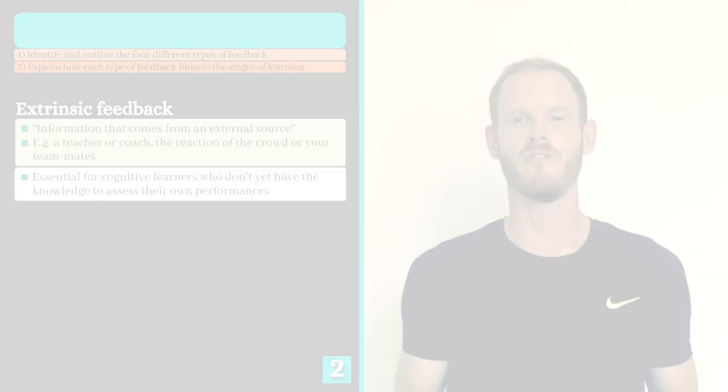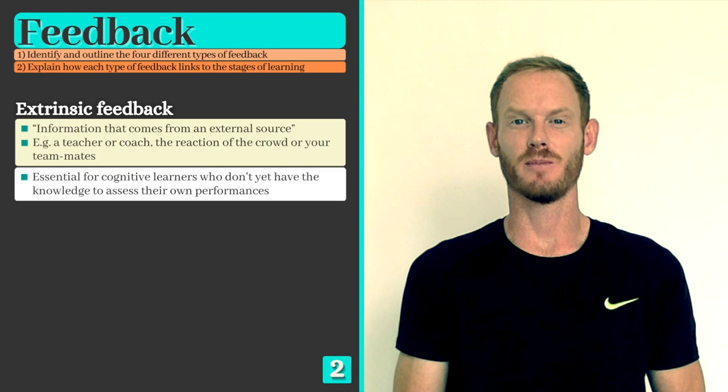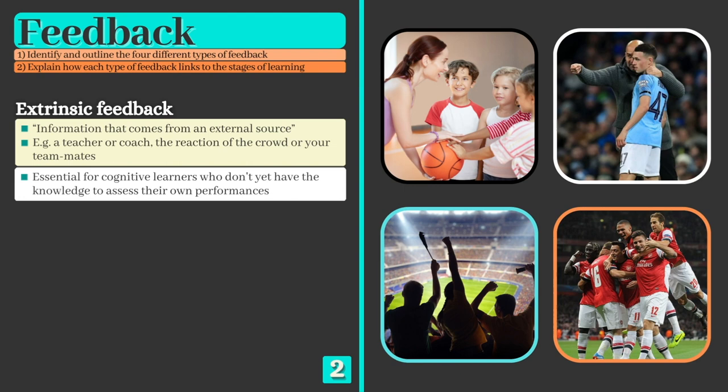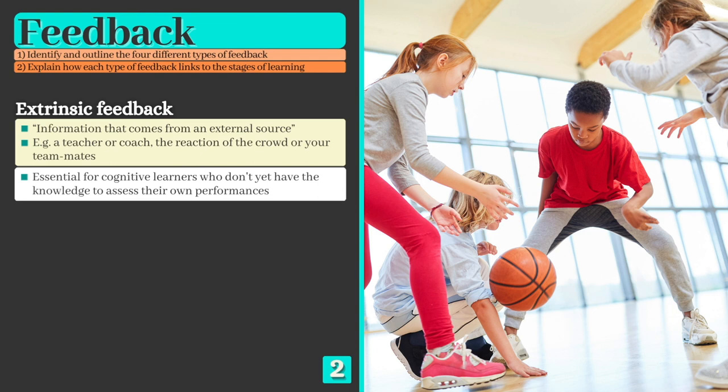Feedback can take several different forms, and one major distinction is between extrinsic and intrinsic feedback. Extrinsic feedback is information that comes from an external source, such as a teacher or coach, the reaction of a crowd, or your teammates. It is particularly important for beginners in the cognitive stage of learning, as they have yet to develop a feel for the skills and techniques and are reliant on an outsider to tell them how they got on and what they need to do to improve.